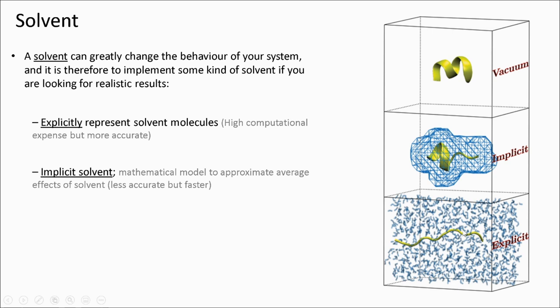Finally, we have the explicit solvent model, which is the most computationally expensive but also the most accurate one. We actually fill up our system with solvent molecules and do molecular dynamics calculations on them.